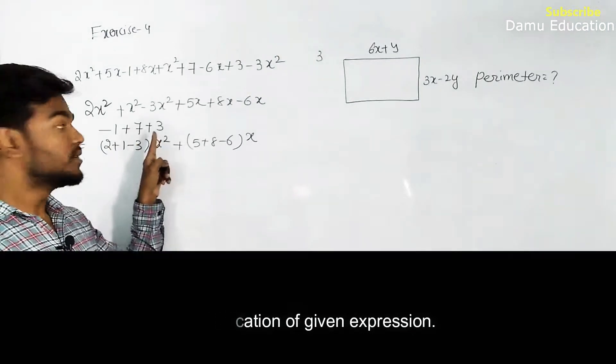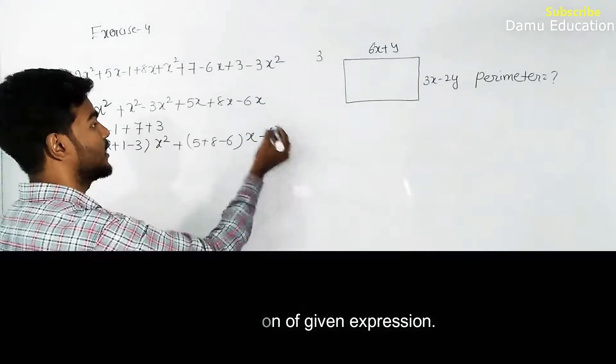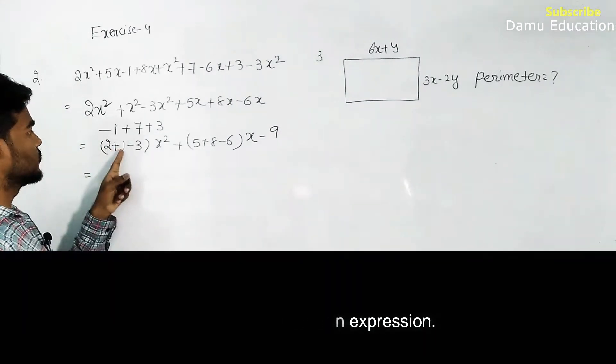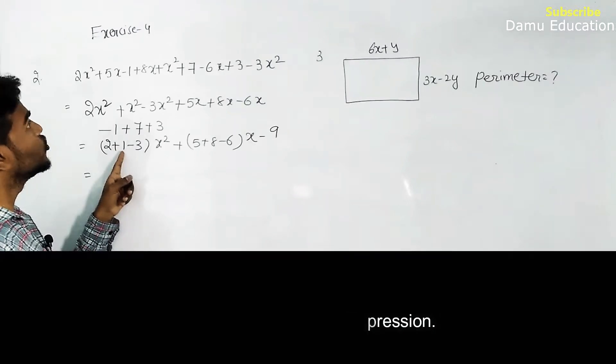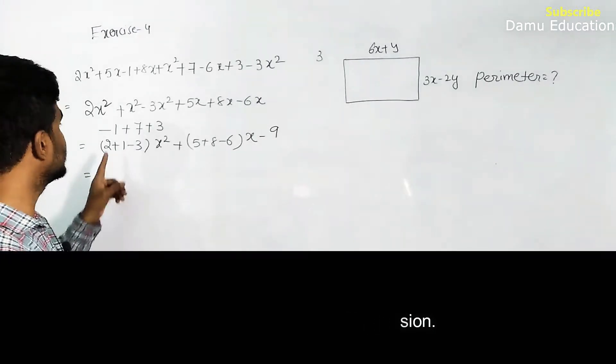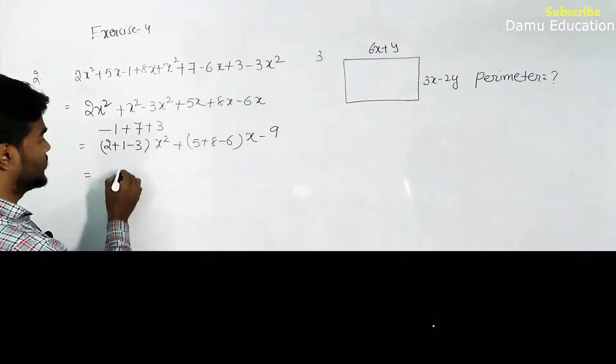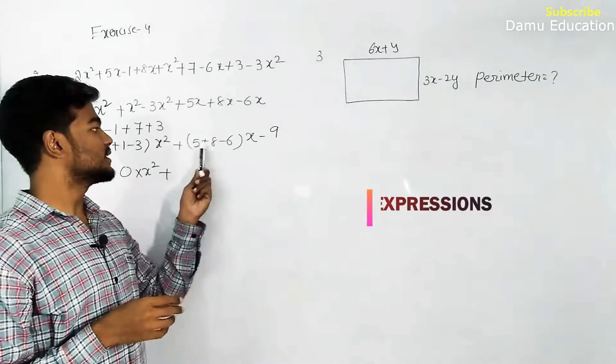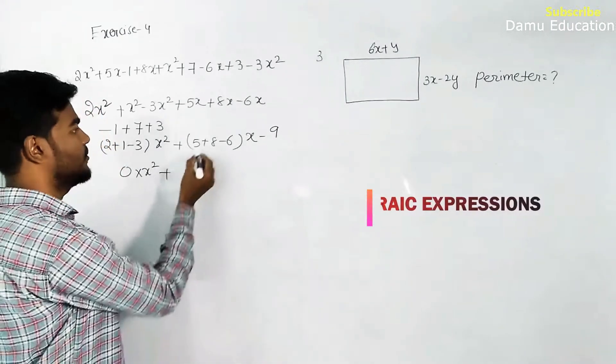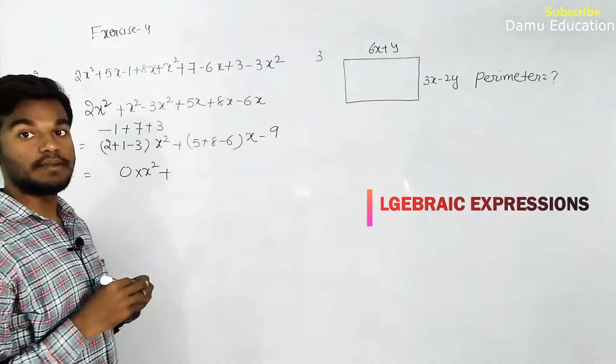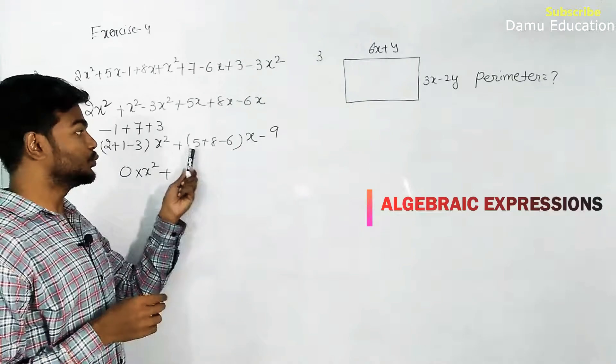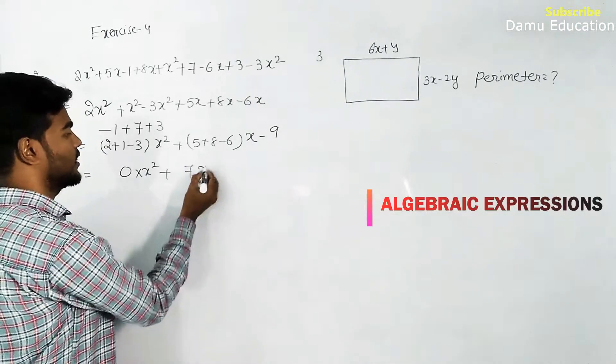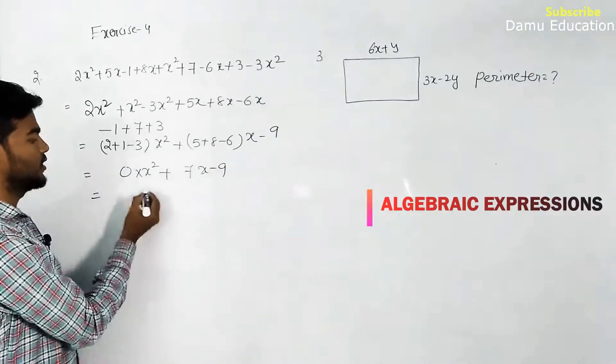10 minus 1 will become 9. So 2 plus 1 will be 3, 3 minus 3 is 0 into x² plus 5 plus 8 is 13, 13 minus 6 will become 7, 7x plus 9.